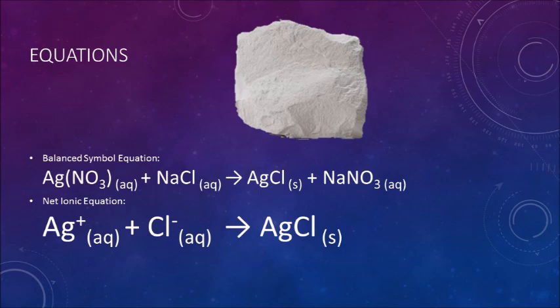The net ionic equation, with spectator ions omitted, tells us that a silver ion combined with a chloride ion to form silver chloride, the precipitate.